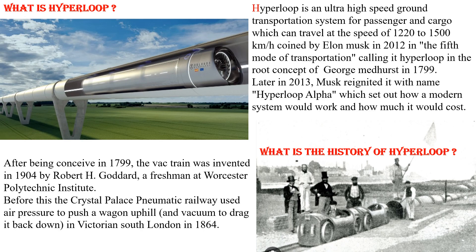This is the first concept of George Madhurst. In 1904, Robert Goddard was at Worcester Polytechnic Institute. The Crystal Palace Pneumatic Railway demonstrated both air pressure and vacuum principles, which formed the conceptual basis for the hyperloop.